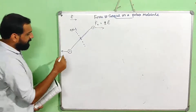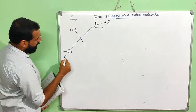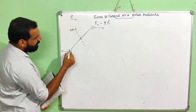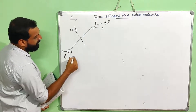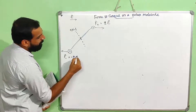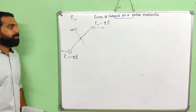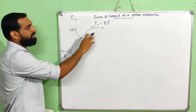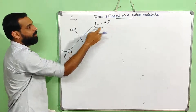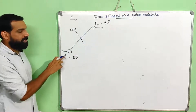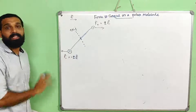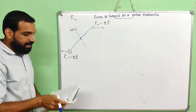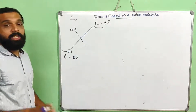The force on the negative charge is F minus. The magnitude of the negative charge is minus Q, so F minus equals minus Q times E. The positive charge experiences force plus QE, and the negative charge experiences force minus QE. This gives us the torque.